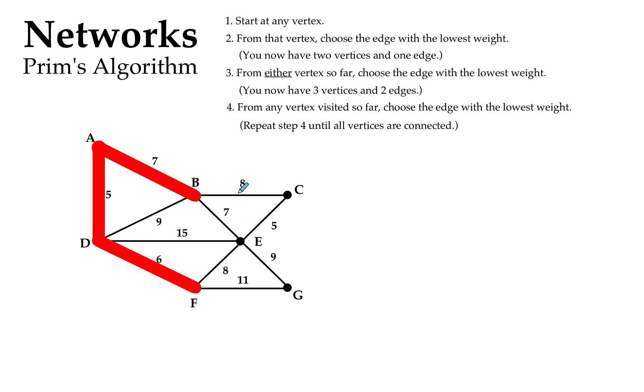So I'm comparing 8, 7, 9, 15, another 8. So they're all the ones that I could collect, and I think you can see that 7 is my lowest one from any point on my red diagram so far. So I'm going to go there.